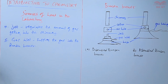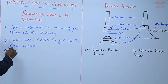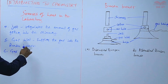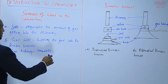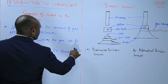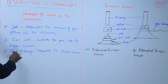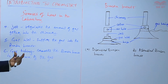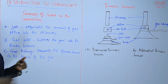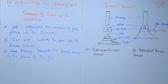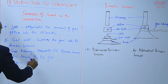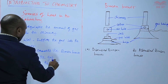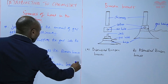The gas inlet supplies the gas into the Bunsen burner, whereas the gas tubing connects the Bunsen burner to the source of the gas — for example, the gas cylinder. The gas tubing is the one that connects the Bunsen burner with the source of gas. And finally, we have the base, which supports the Bunsen burner on the bench.